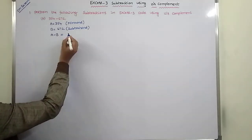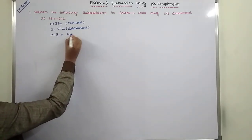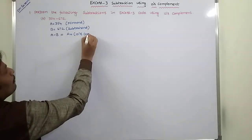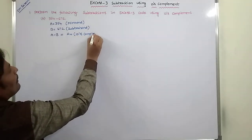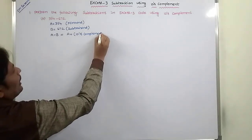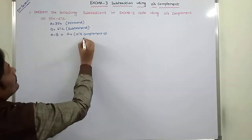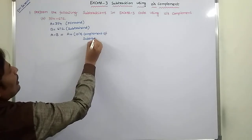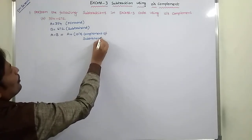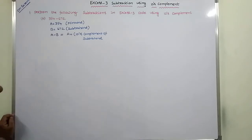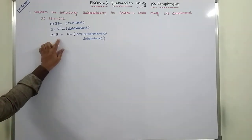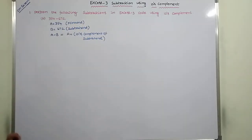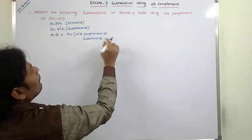So A minus B is equal to A plus ten's complement of the subtrahend. Here we have to perform the subtraction operation using ten's complement. Therefore, A minus B equals A plus ten's complement of subtrahend B.